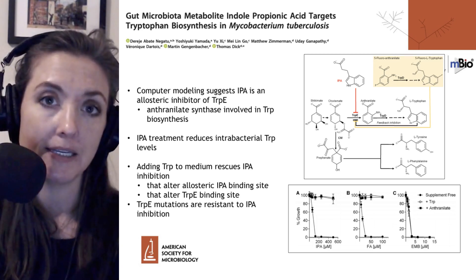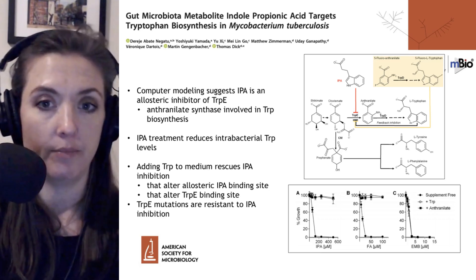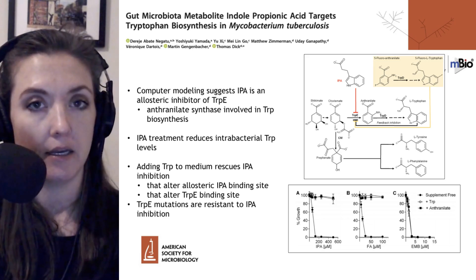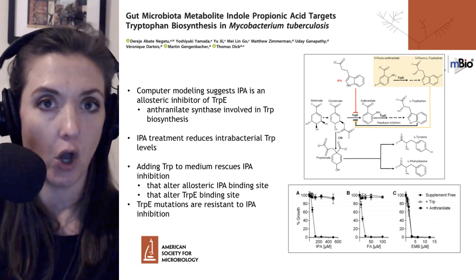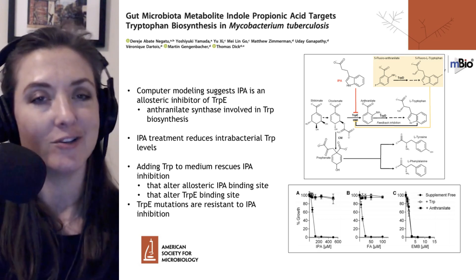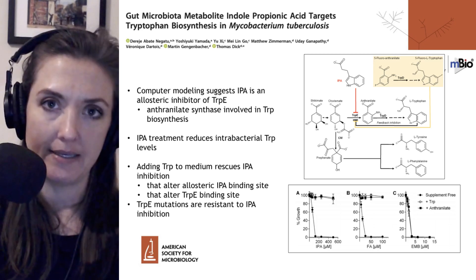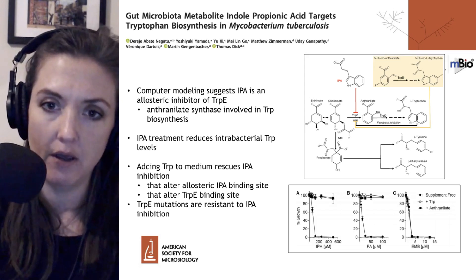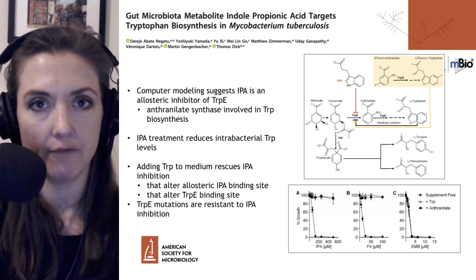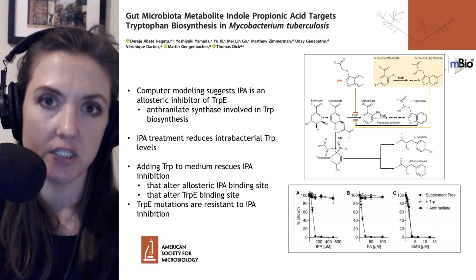Computer modeling suggested that IPA may be an allosteric inhibitor of TrpE. TrpE is an anthranilate synthase associated with tryptophan biosynthesis. An allosteric inhibitor is one that binds to an enzyme not at its active site but somewhere else — it's not competing with the substrate, but can change the conformation or the ability of that enzyme to do its job through interacting with a different site.